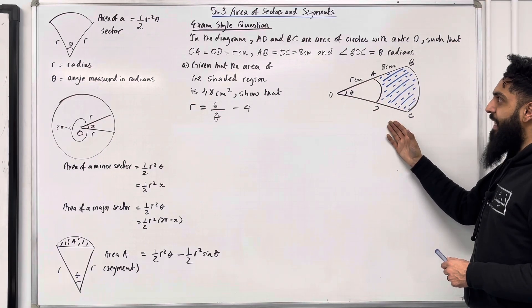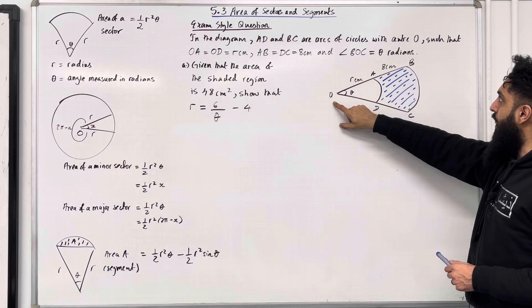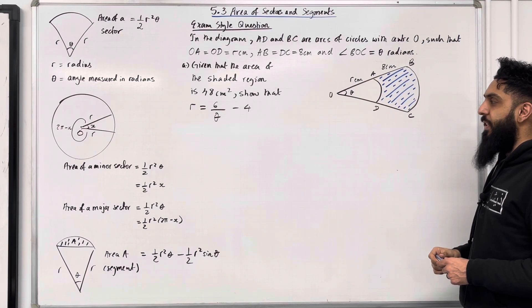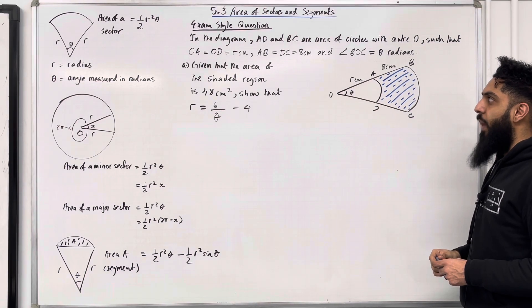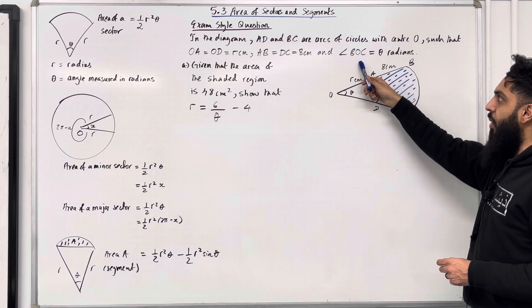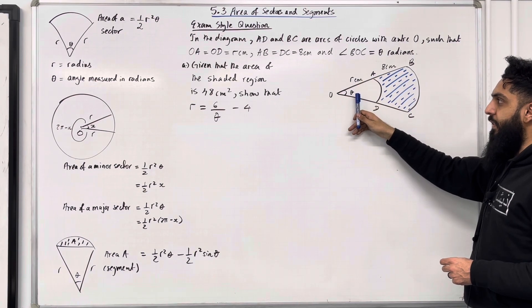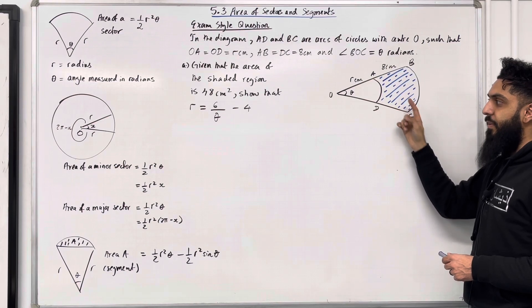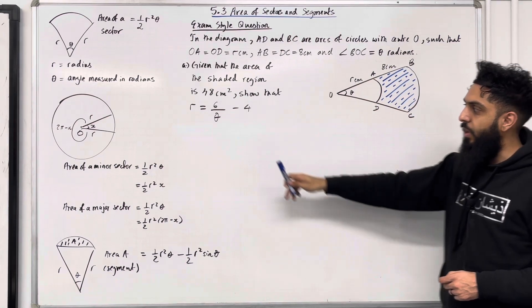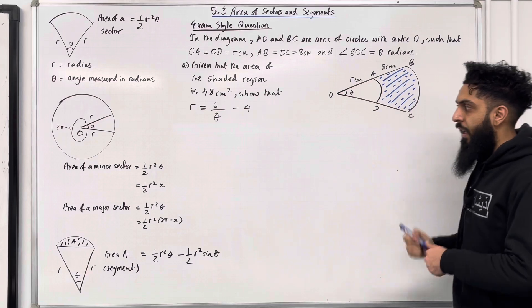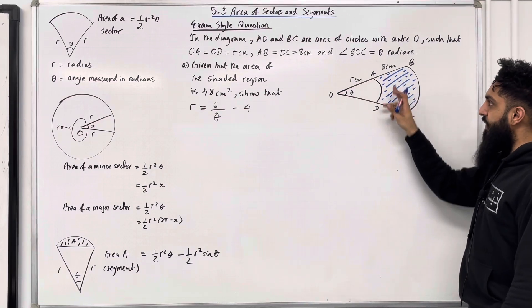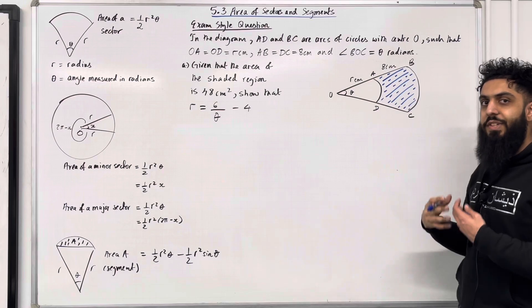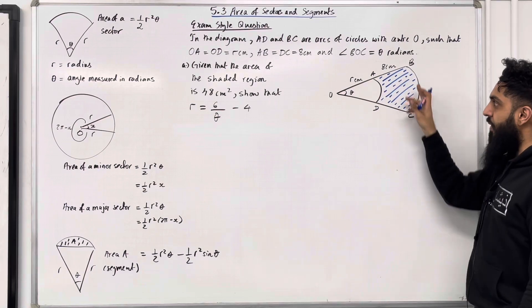In the diagram, AD and BC are arcs of circles with centre O, such that OA equals OD equals R centimetres, AB equals DC equals 8 centimetres, and angle BOC is theta radians. Part A: given that the area of the shaded region is 48 centimetres squared, show that R equals 6 over theta minus 4. We've been given the area of the shaded region as 48 centimetres squared, so I'm going to calculate an expression for it.